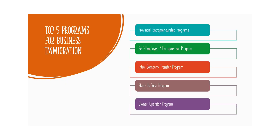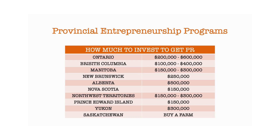Now let's touch upon the top five programs for business immigration. You could choose to pause the video here to read this list yourself. The first one on the list is the provincial entrepreneurship program. There are 18 different programs offered by 13 provinces. Each province has specific requirements, and I'm going to focus mainly on the requirements and processes that are common across all provinces just to give you a broad idea.